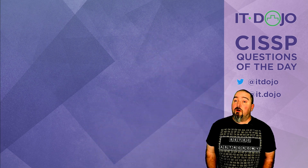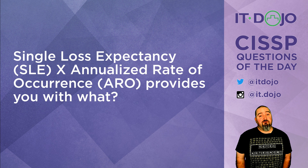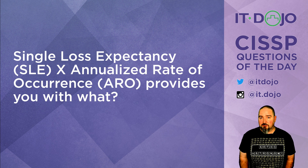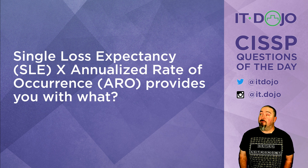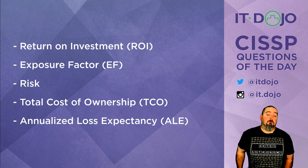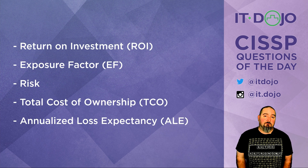Question number one: if you take single loss expectancy and combine it with the annualized rate of occurrence, what do you get? Here are your answer choices. Click pause if you need to figure it out. When you're ready, click play and we'll talk it out.